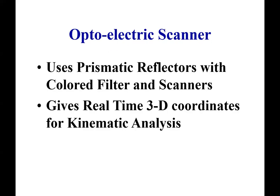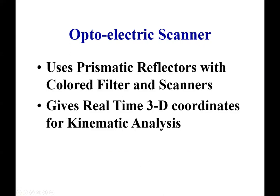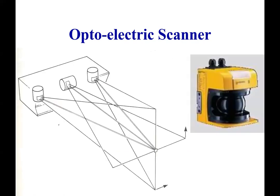Next come optoelectric scanners, which use prismatic reflectors with colored filters and scanners to give real 3D coordinates for kinematic analysis. This is one of the very accurate methods of gait analysis, but it is rather expensive — different kinds of light are thrown onto the person and the system scans the motion.